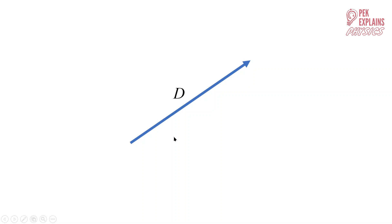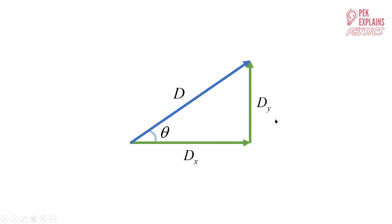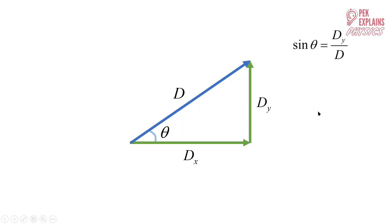Now we will learn how to resolve vectors. This is vector D. Vector D has two components: the X component and Y component. The X component is called DX and the Y component is DY. This vector D has the angle theta with the X component DX. So how do we find DX and DY — how do we calculate them?